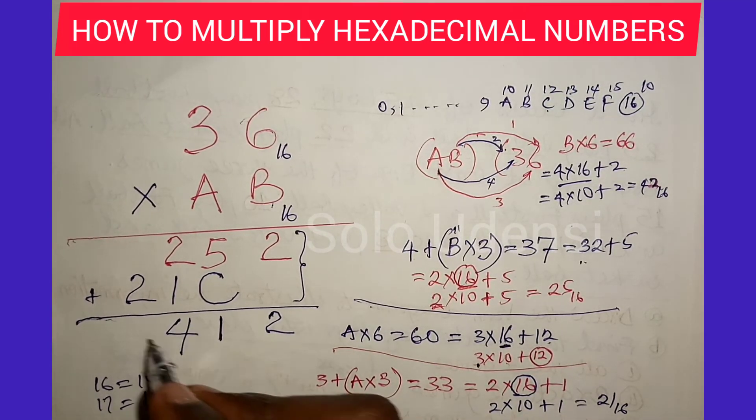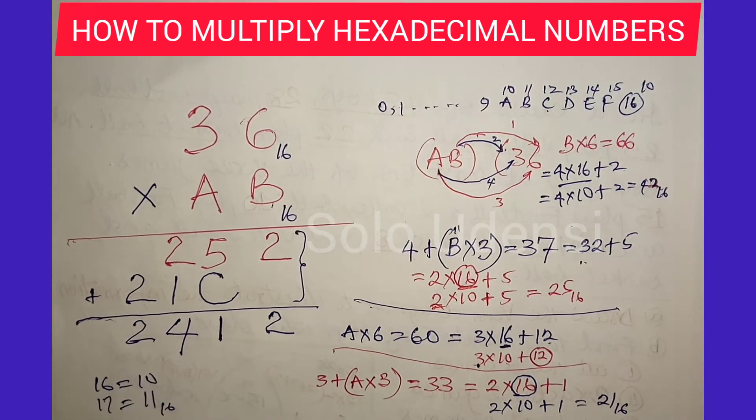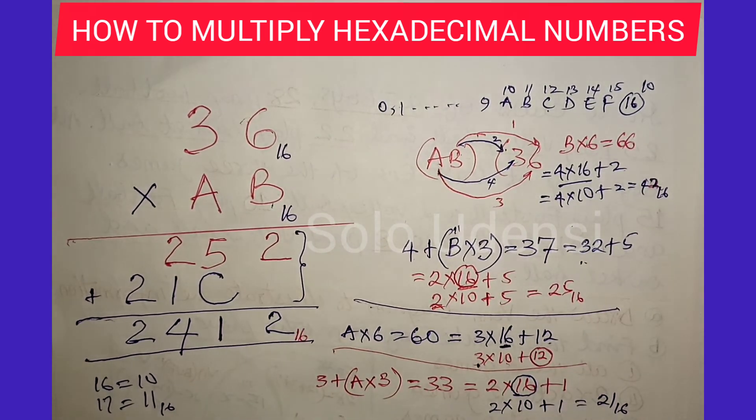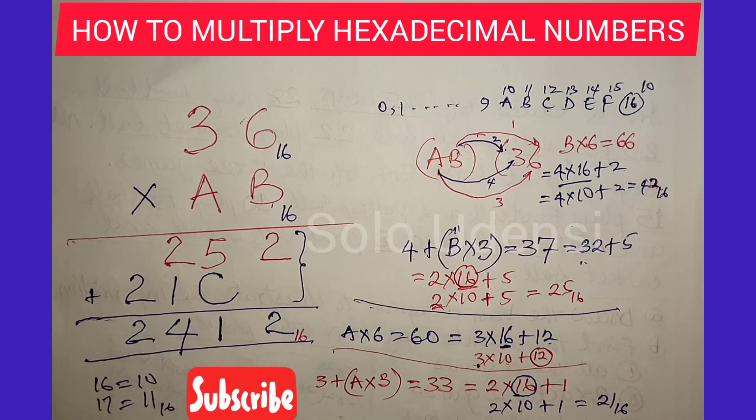So we bring down this one so that the answer in base 16 becomes 2412 base 16. That is how to multiply numbers in base 16. Kindly like, share and subscribe. Thanks and bye.